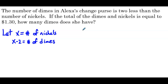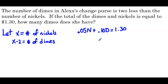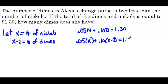If we take the value of our nickels and add it to the value of the dimes, we're going to get $1.30. Each nickel is 5 cents, each dime is 10 cents, and that's $1.30. So rewriting this equation in terms of x, we have 0.05 times x plus 0.1 times (x minus 2) equals 1.3.